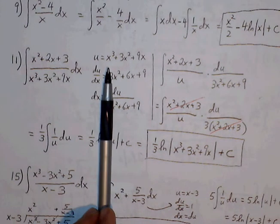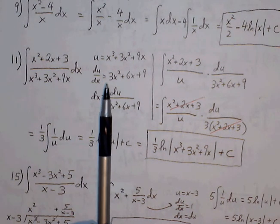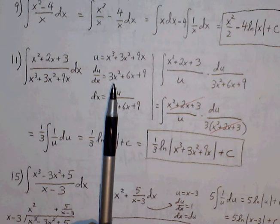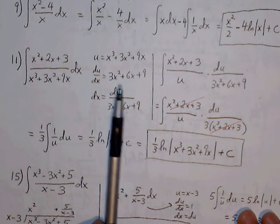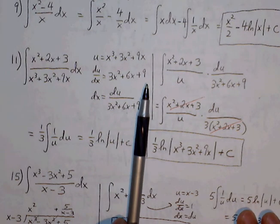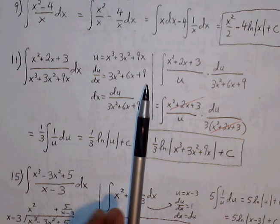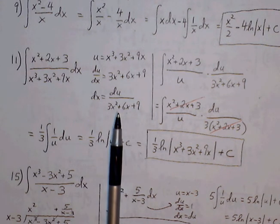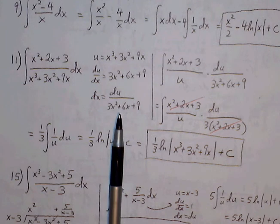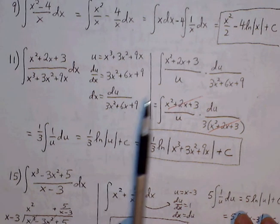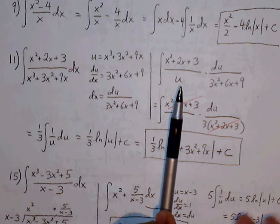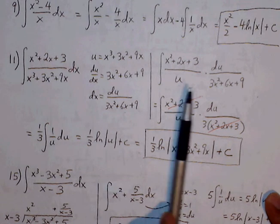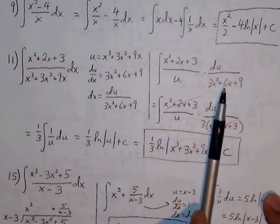Once we assign that u value, we find the derivative with respect to x: x cubed becomes 3x squared, 3x squared becomes 6x, and 9x becomes 9. We cross multiply and solve for dx. dx equals du over 3x squared plus 6x plus 9. We make our substitutions — the denominator gets replaced with u, and dx gets replaced with du over 3x squared plus 6x plus 9.